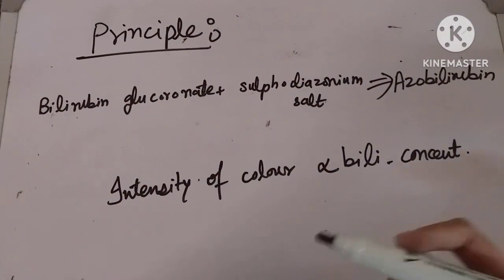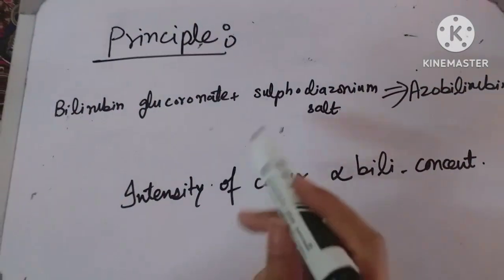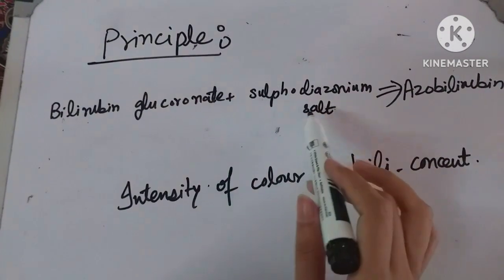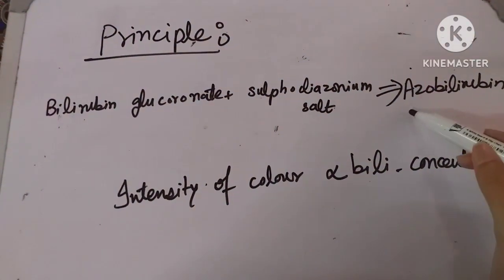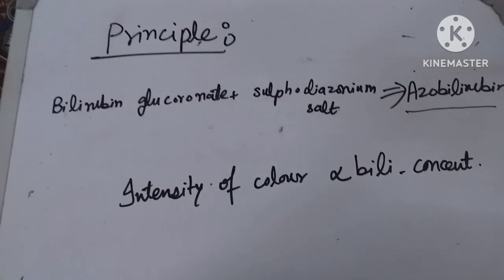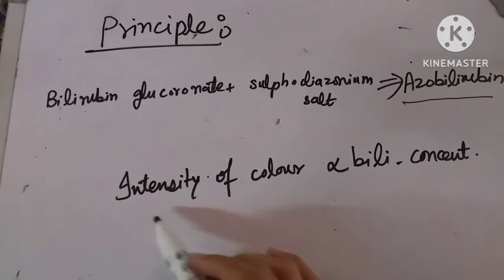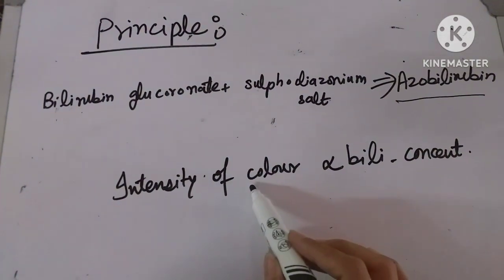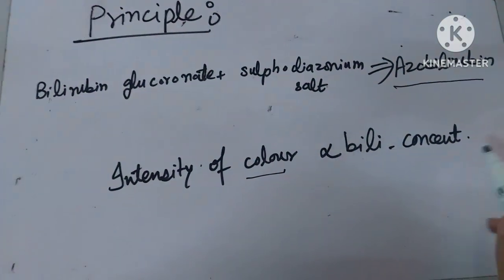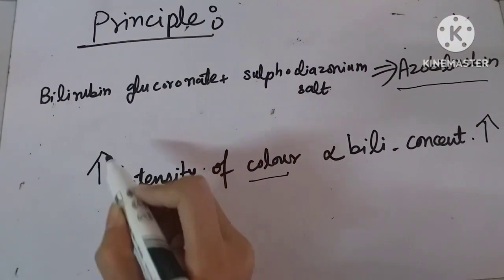For every test to be performed, we should know its principle. The principle of total bilirubin: bilirubin glucuronate reacts with sulfanilium salt and produces colored azo bilirubin. The color that appears in our reaction is due to azo bilirubin formation, and its intensity is directly proportional to bilirubin concentration. If bilirubin concentration is high, the reaction mixture will show an intense color.